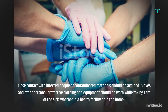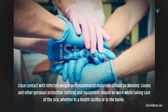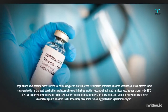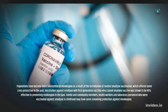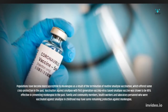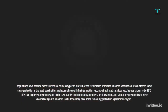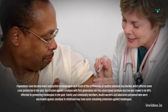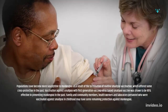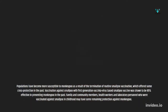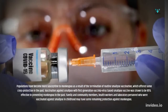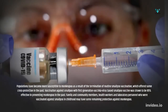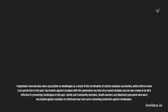Gloves and other personal protective clothing and equipment should be worn while taking care of the sick, whether in a health facility or in the home. Populations have become more susceptible to monkeypox as a result of the termination of routine smallpox vaccination, which offered some cross-protection in the past. Vaccination against smallpox with first-generation vaccinia virus-based smallpox vaccine was shown to be 85% effective in preventing monkeypox. Family and community members, health workers, and laboratory personnel who were vaccinated against smallpox in childhood may have some remaining protection against monkeypox.